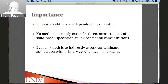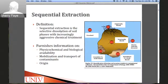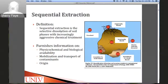Release conditions are dependent upon chemical speciation — the form in which the radionuclide is in when it's released. There is no current method for the direct measurement of solid phase speciation at concentration levels seen in the environment. Therefore, the best approach is to indirectly assess the contaminant association with primary geochemical host phases of the soils and sediments. This is done by sequential extraction, which is the selective dissolution of soil phases with increasingly aggressive chemical treatment. This method can provide information on biological availability, potential for mobilization and transport, and the origin of the sediment.